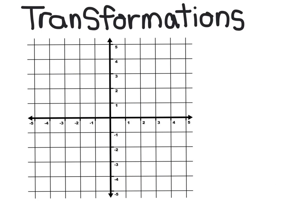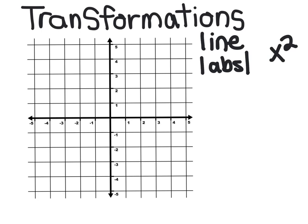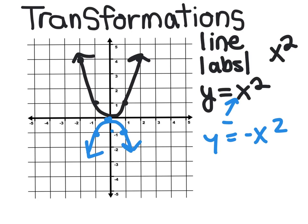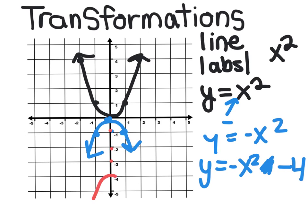The bottom line for this chapter is you have to be able to graph a line, an absolute value, and a quadratic, and transform them. You need to know that y equals x squared makes a parabola, that making the coefficient of x squared negative turns it upside down, and that changing the number after x squared moves the parabola down. This could be a lot of Algebra 1 review, or just a little, depending on how well you remember your algebra.